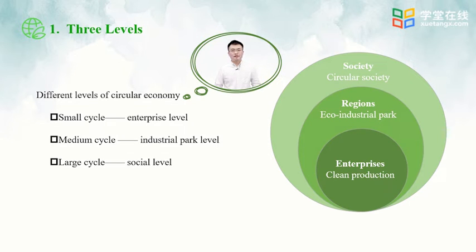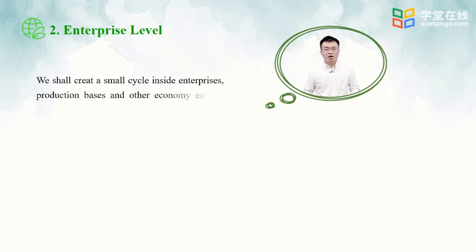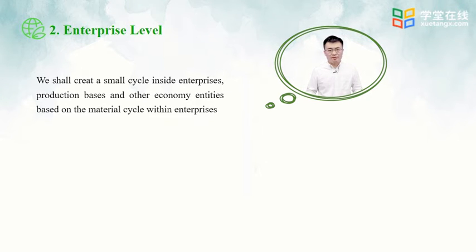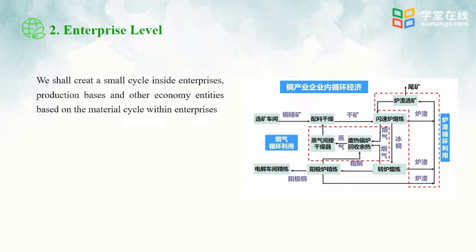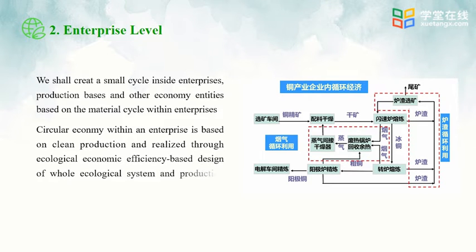In this picture, we can see how the copper industry achieves enterprise circular economy by utilizing waste heat and tailings. This is how the small cycle is achieved inside economic entities such as enterprise production bases. Circular economy within an enterprise is based on cleaner production and realized through ecological economic efficiency-based design of the whole ecological system and production process. The copper industry is ideal for demonstration — we can utilize waste heat and tailings through clean production to implement circular economy.